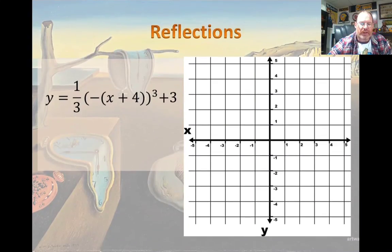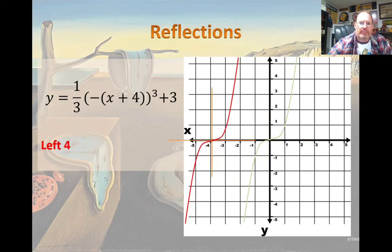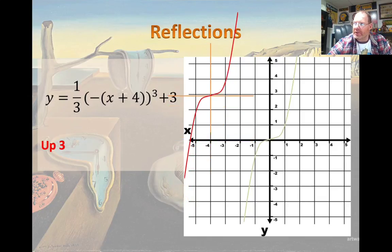Back to that cube function. What does the parent function look like? It's a cube. It's left 4 spots. It's up 3 spots. And I hope you can see that orange set of axes moving right along with it.